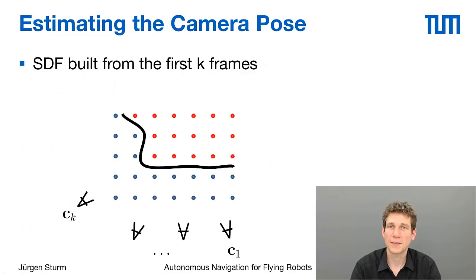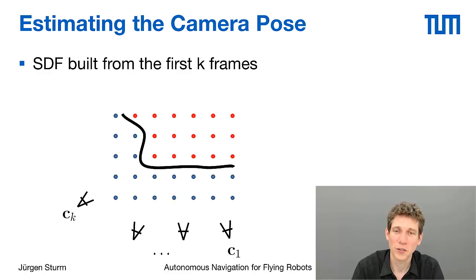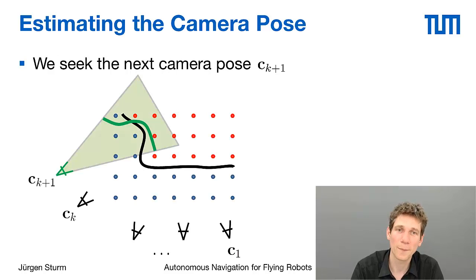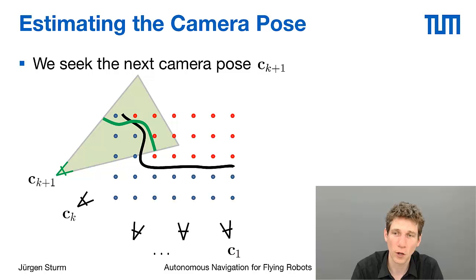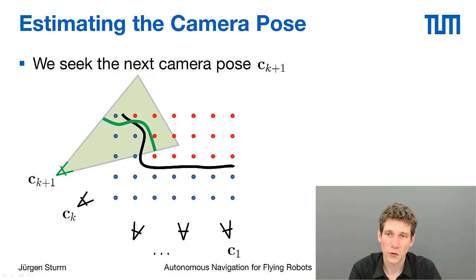The next step is estimating the camera pose. We assume we have already built the signed distance function from the first k frames, meaning in the very beginning we assume we know the initial pose of the quadrotor — say located at the origin. With every new frame we can initialize with constant velocity or just assume zero velocity using the previous pose. The depth camera gives us a surface in 3D, and our goal is to align that surface to the surface stored in our signed distance function.